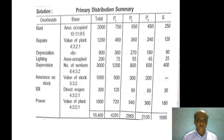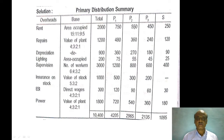Now let us see the solution. The primary distribution summary table has columns: Overhead, Basis, Total, P1, P2, P3, and S department. First, Rent. The basis is area occupied. The total amount is rupees 2000.